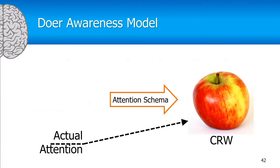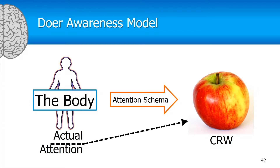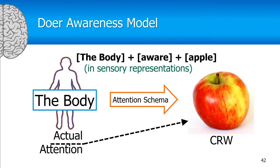For the doer, the self-model is the body, and for the doer, it might be doing this in a sensory representation — it's in a feeling. So it's the feeling that the body is aware of the apple. This is kind of the qualia, like the awareness of the red in the apple there.